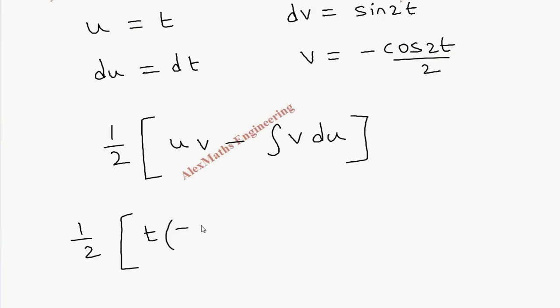We will write half bracket open, uv which is t into minus cos 2t by 2, minus integral once again minus cos 2t by 2, du is dt.